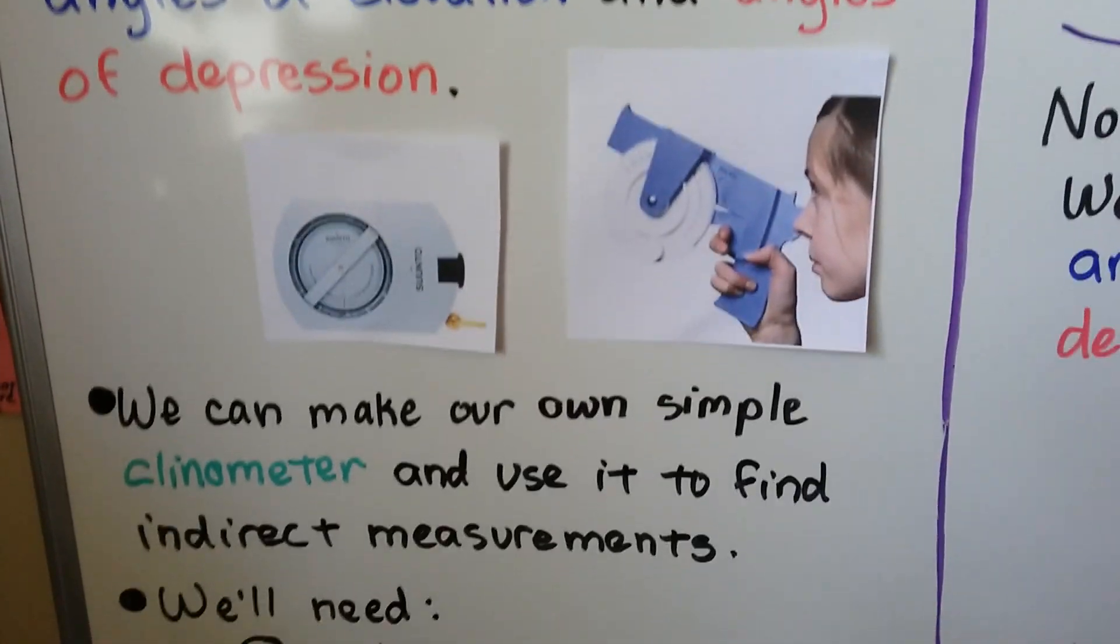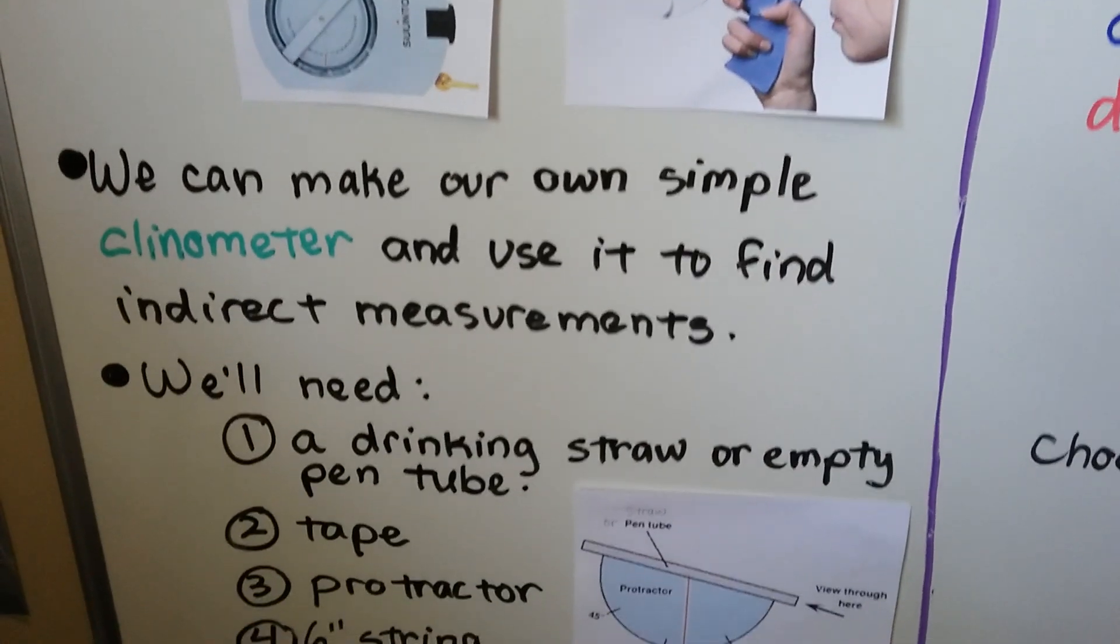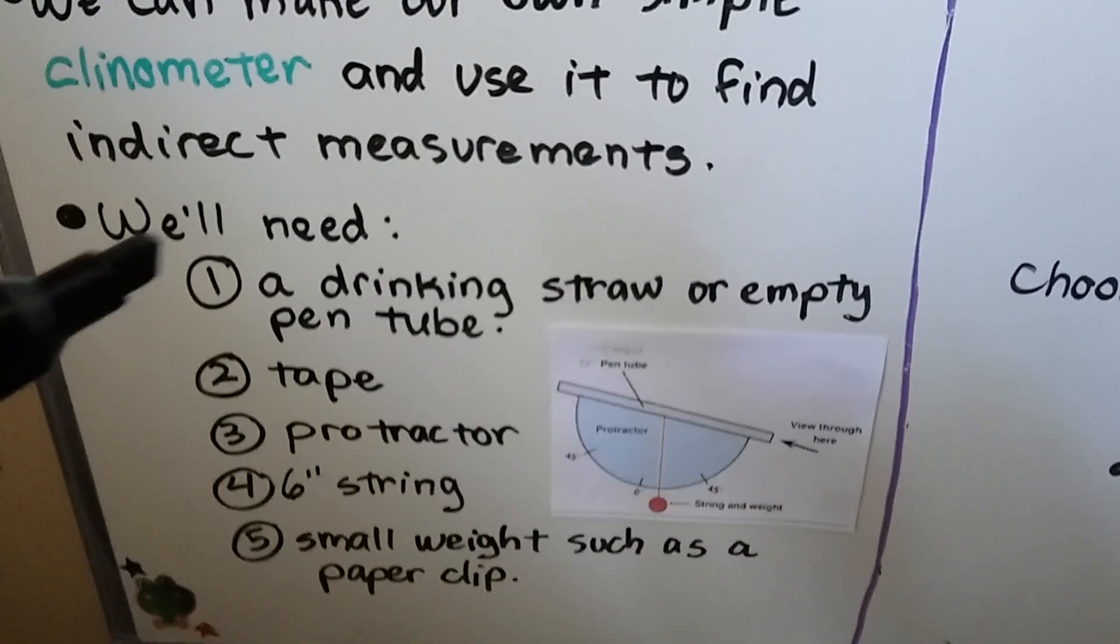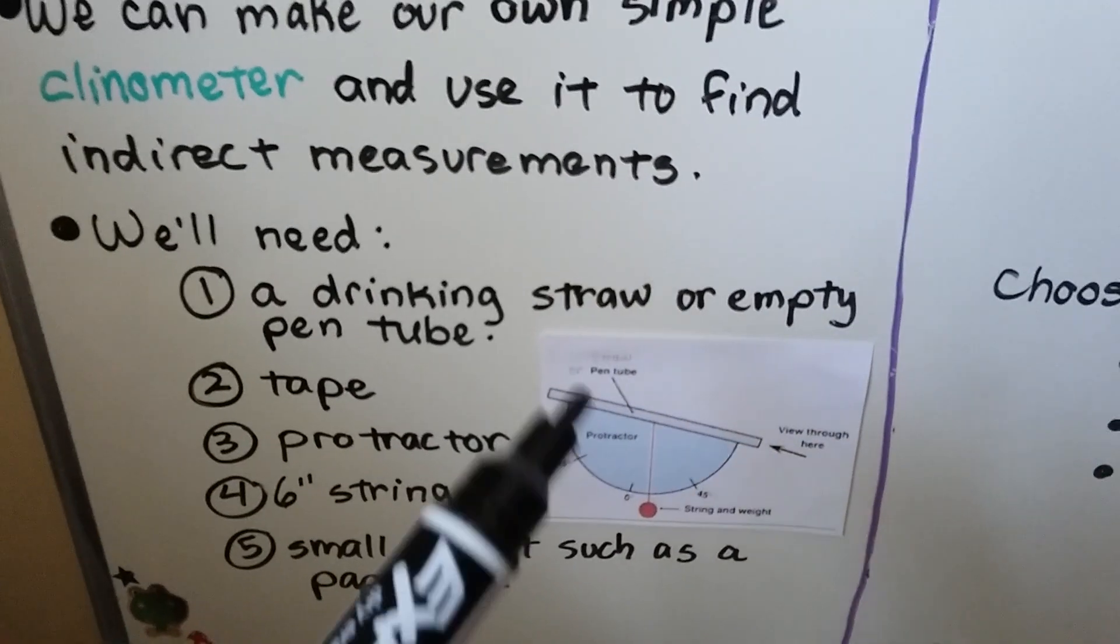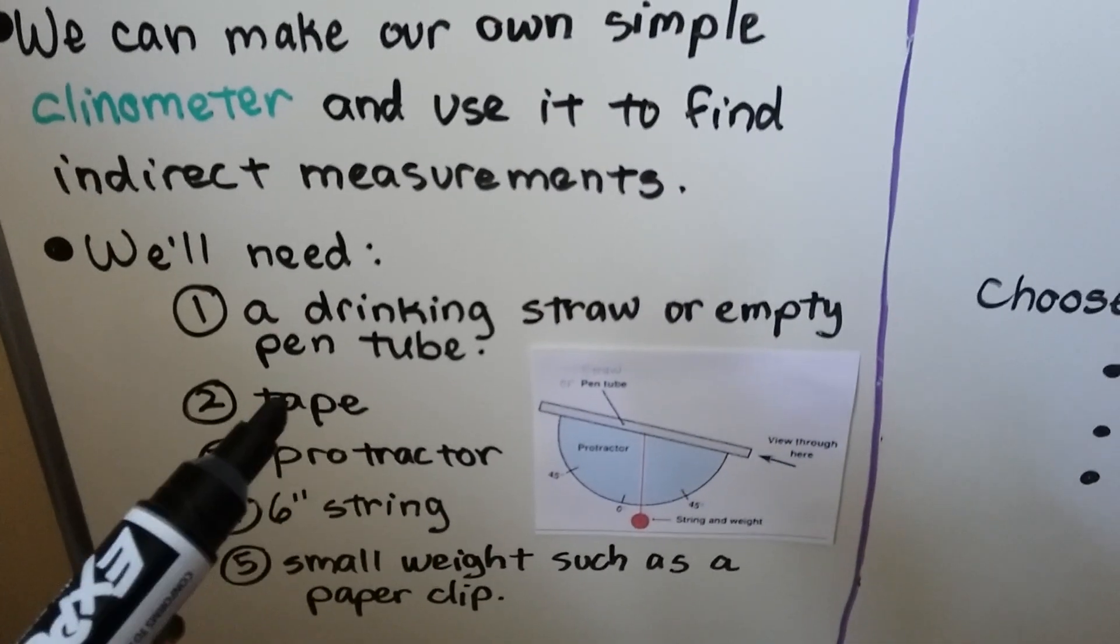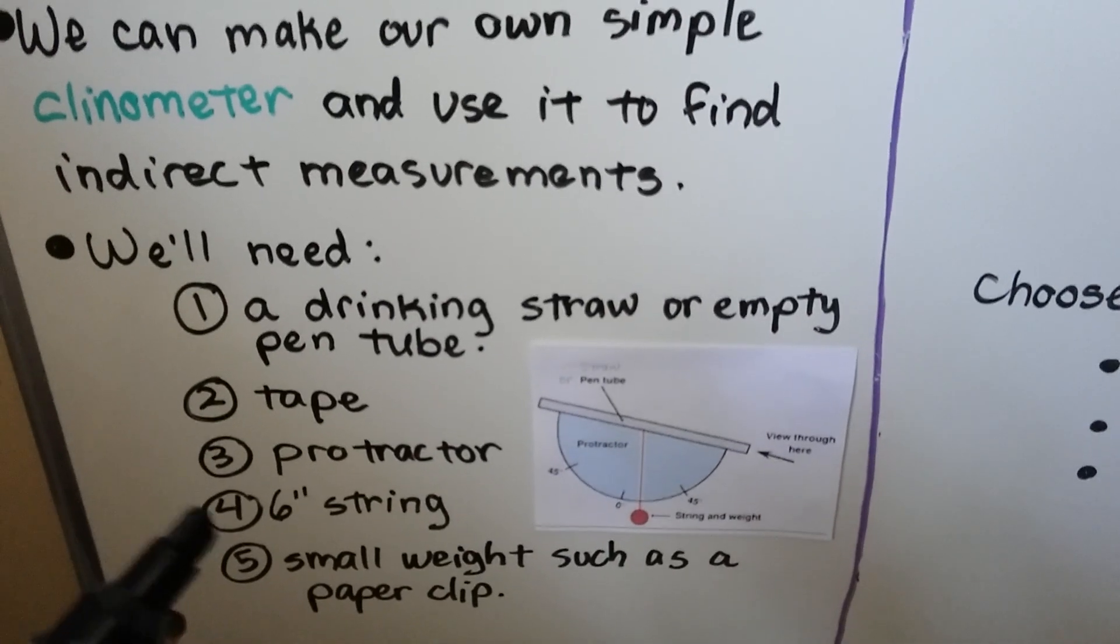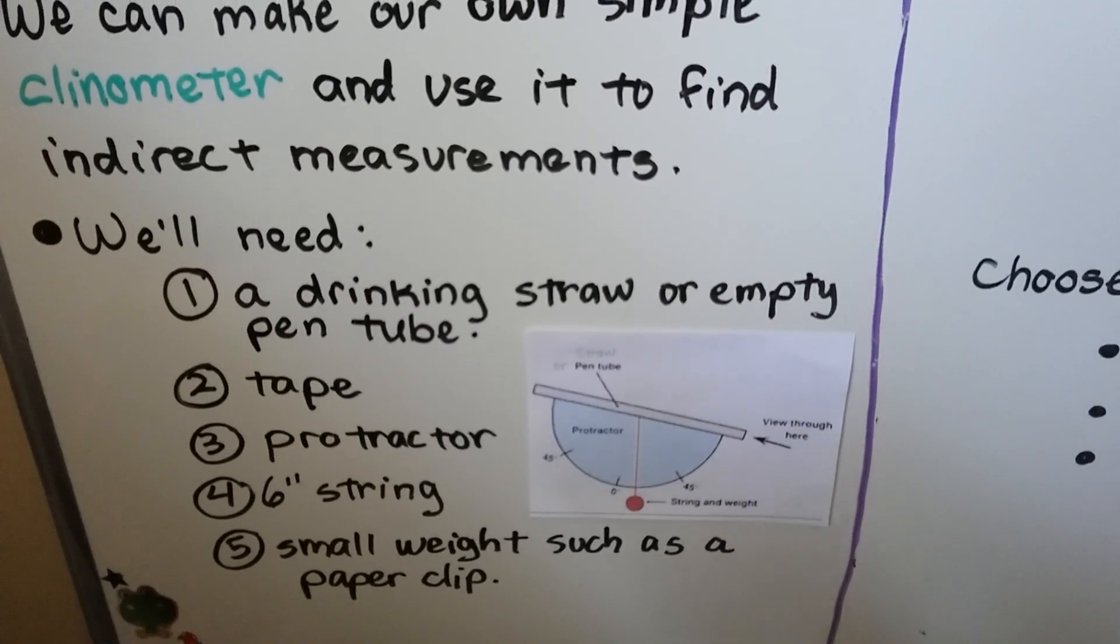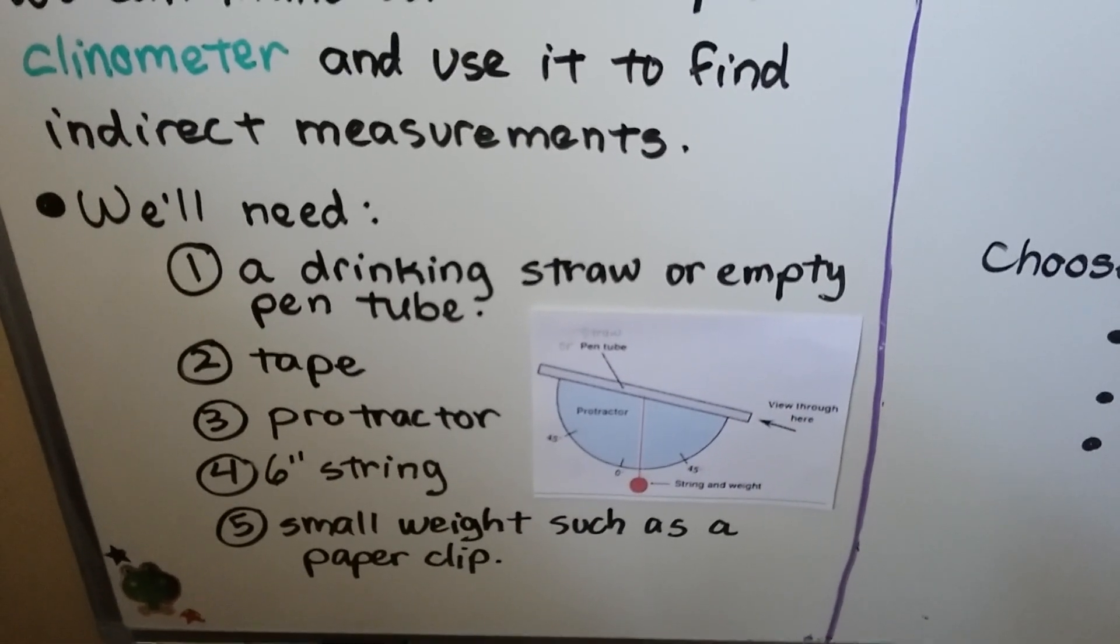We can make our own simple clinometer and use it to find indirect measurements. So we're going to need five things: a drinking straw or an empty pen tube like an empty Bic pen, some Scotch tape, a protractor, about six inches of string, and a small weight like a paper clip or a metal washer.